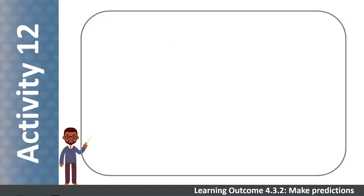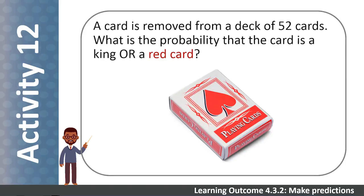Let's do another example. Work in your pairs again. A card is removed from a deck of 52 cards. What is the probability that the card is a king or a red card?